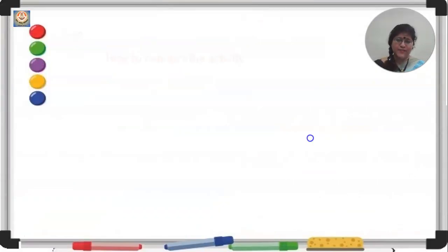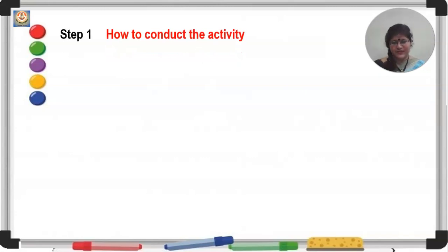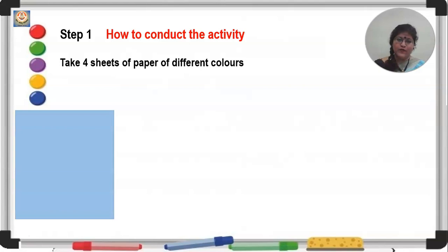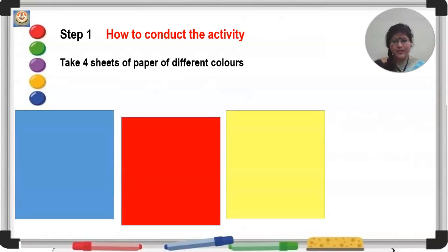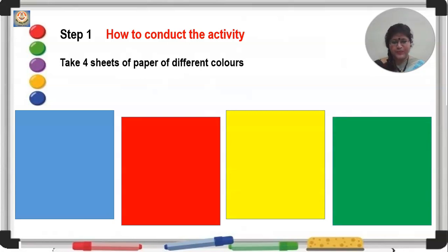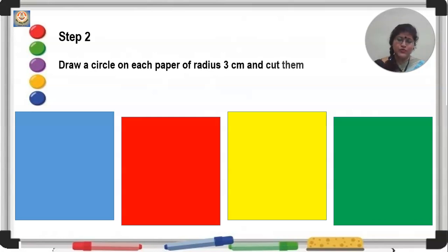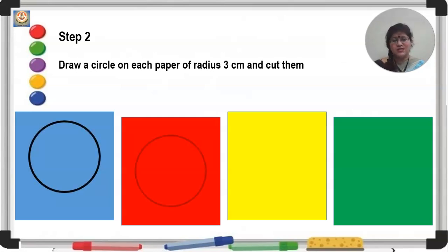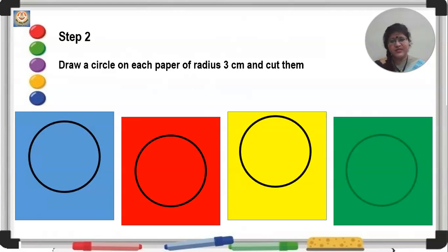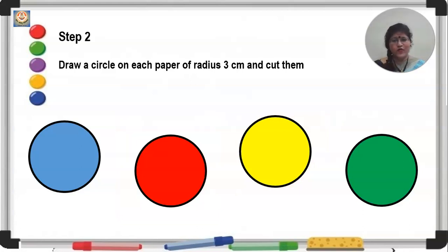Step 1: let us see how to conduct the activity. I want you to take 4 sheets of paper of different colours. If you don't have papers of different colours, you could take a white paper and shade it with crayons. You could also use papers of different textures. Step 2: draw 4 congruent circles on these papers. You could draw circles of radius 3 centimetres, 2.5 centimetres, or 4 centimetres — whatever radius is convenient for you. When you cut them, you get 4 congruent circles.